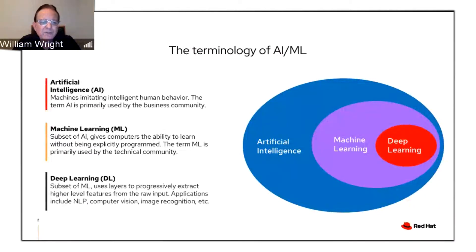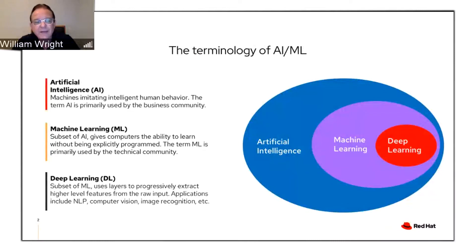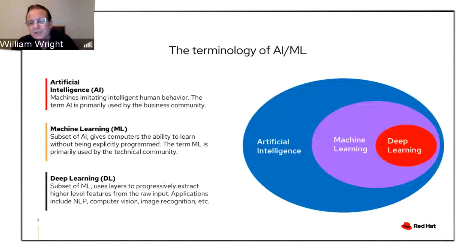And then there's deep learning, which is a subset of machine learning that uses neural network-style layers to progressively discern and extract higher-level features from raw input — usually very large amounts of data. Applications include NLP (Neuro Linguistic Programming), computer vision, and image recognition. NLP straddles both machine learning and deep learning and is a very interesting technique we'll talk more about later.